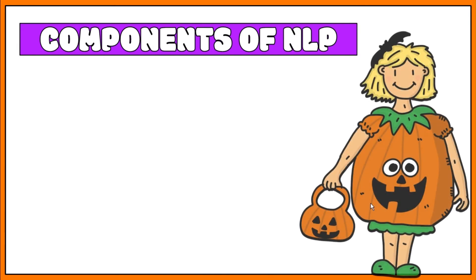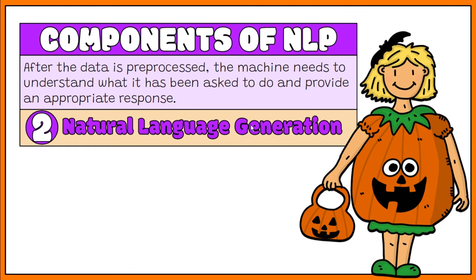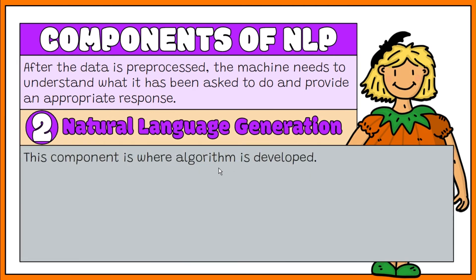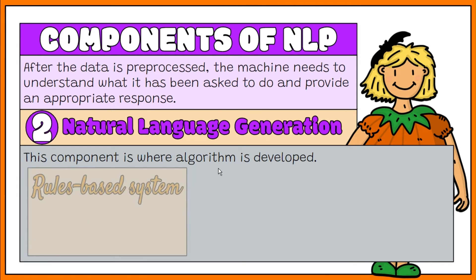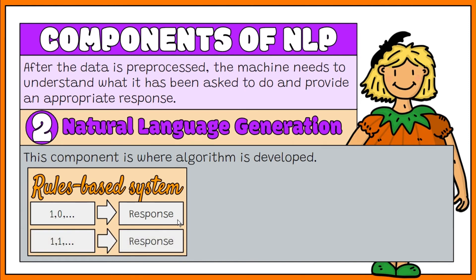Once data has been pre-processed, an algorithm is developed to process it. The machine has to understand what it has been asked to do and provide a response or feedback. This is where the second component comes in, called natural language generation or NLG. This also requires algorithm development. There are many different NLP algorithms, but two main types are commonly used. The first is a rules-based system, which uses carefully designed linguistic rules. This approach was used early on in the development of NLP and is still being used.